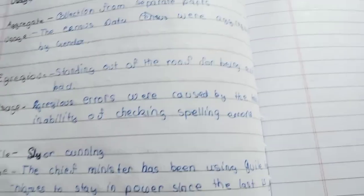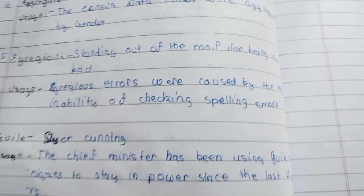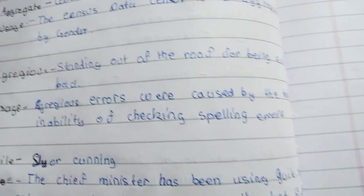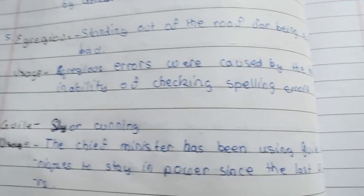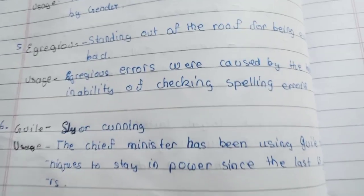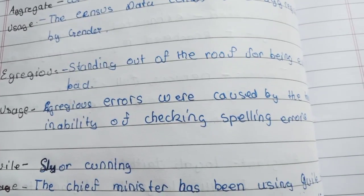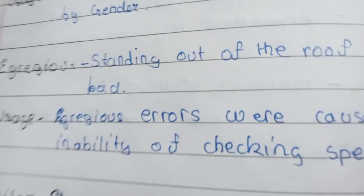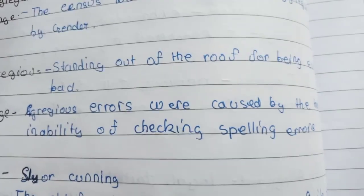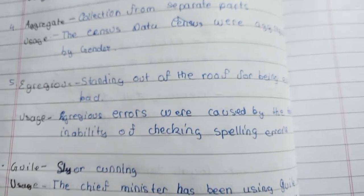The next word is egregious, meaning standing out from the rest for being evil or bad. Some people are expelled from society, school, or offices due to their egregious behavior. Usage: 'Egregious errors were caused by the tablet's inability to check spelling errors.'